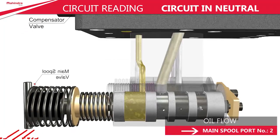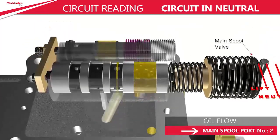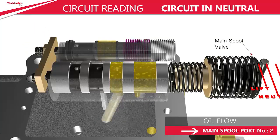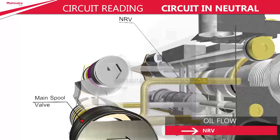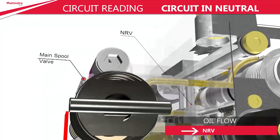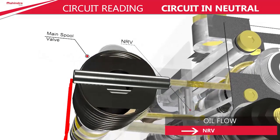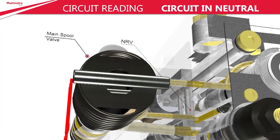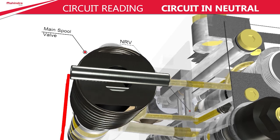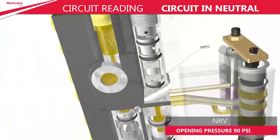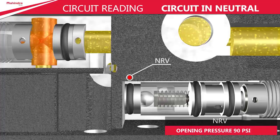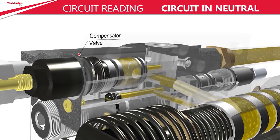The oil is further divided into two parts: one path goes towards the compensator valve bore, and the other path has oil entering port number two of the main spool. Further, the oil reaches the NRV through port number three of the main spool. As the opening pressure of the NRV is 90 psi, this oil will not open the NRV.